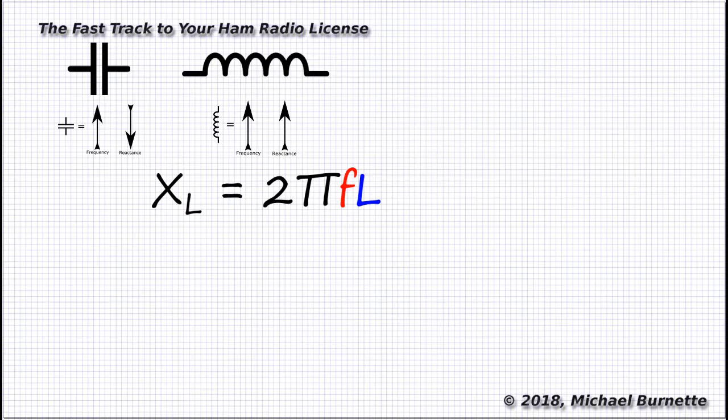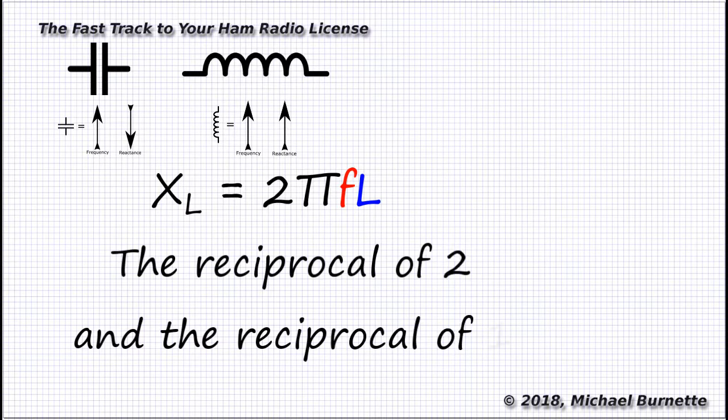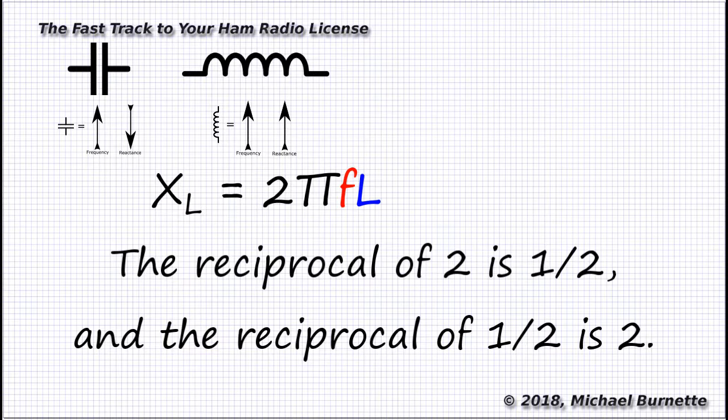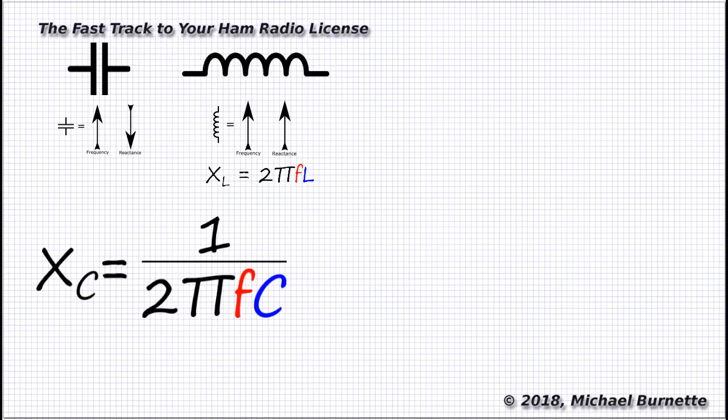Now, we know capacitors work in a way that's the opposite of inductors. Mathematicians would say they work in a way that's the reciprocal of inductors. And so the formula for capacitive reactance is the reciprocal of the formula for inductive reactance. Reciprocal just means divide that whole mess into 1. And so the formula is XC, capacitive reactance, equals 1 over 2πfC. Capacitive reactance equals 2 times π, times the frequency, times the capacitance in farads, all divided into 1.